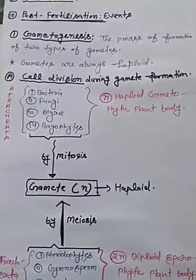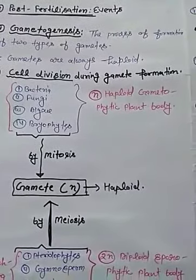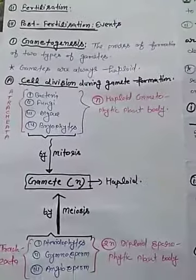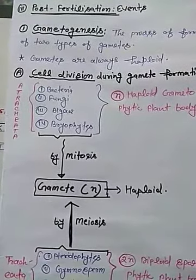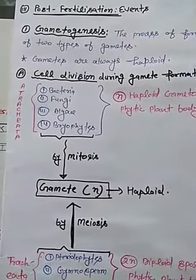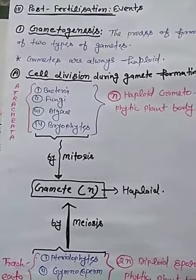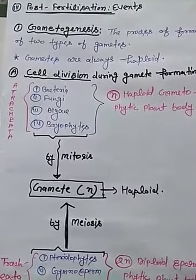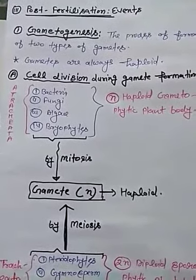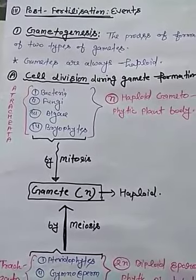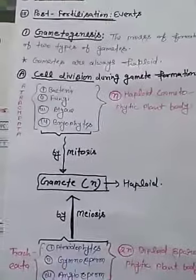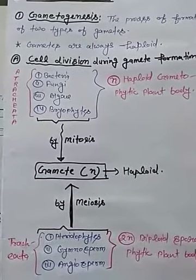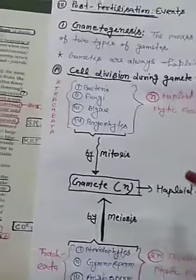In gametogenesis there are three important points. The first point is cell division during gamete formation. Haploid organisms produce gametes by mitotic division, but diploid organisms produce gametes by meiotic division of a specialized cell called meiocyte — the meiocyte is the gamete mother cell.